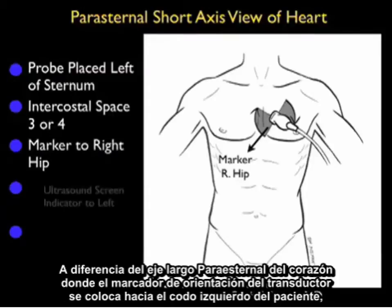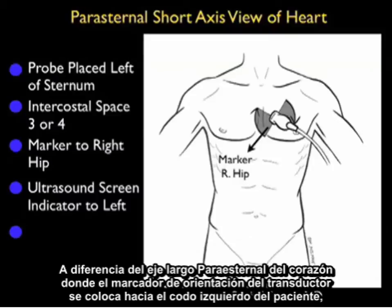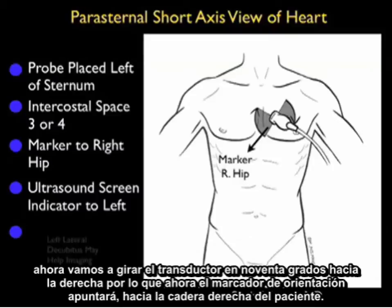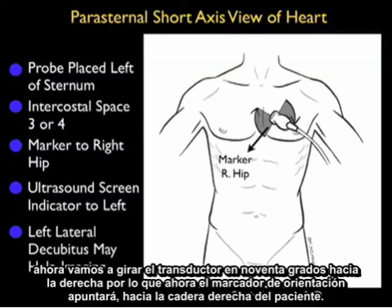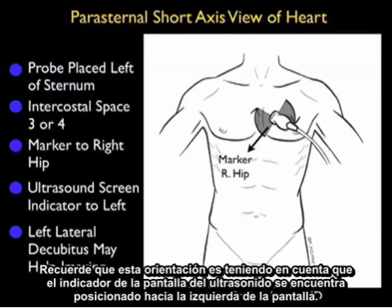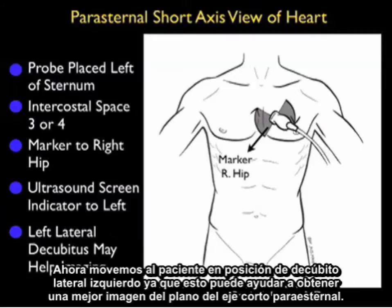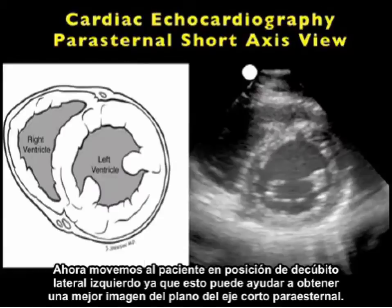In variance to the parasternal long axis view of the heart, where the probe marker was positioned down towards the patient's left elbow, we'll swivel the probe 90 degrees clockwise, so now the marker is down towards the patient's right hip. That's with the caveat that the ultrasound screen indicator is positioned towards the left of the screen. Moving the patient into left lateral decubitus position may help imaging from the parasternal short axis plane.